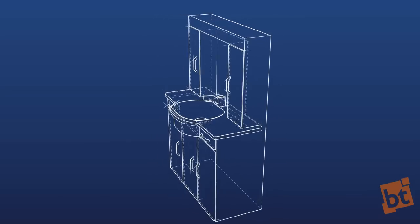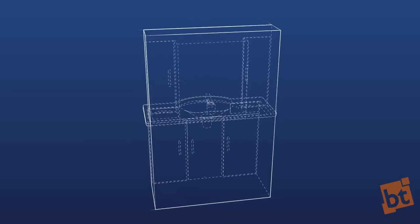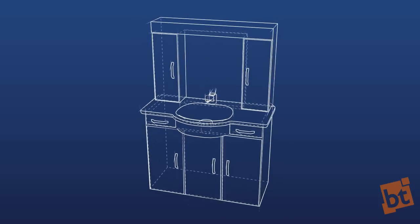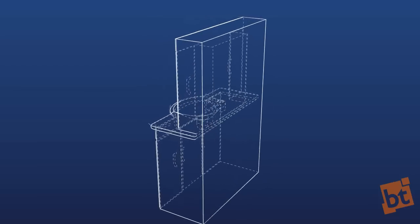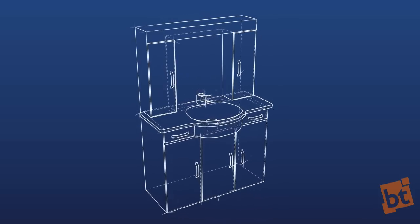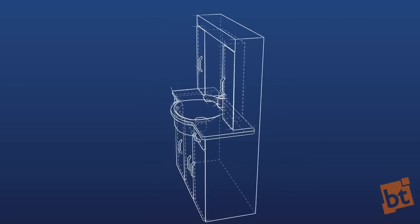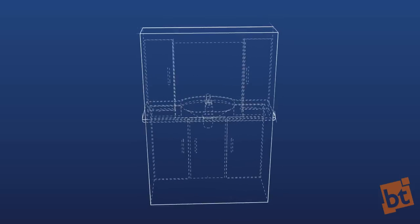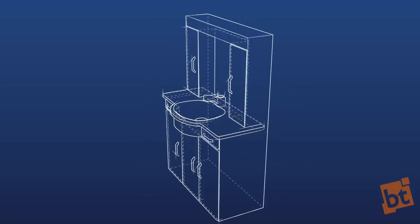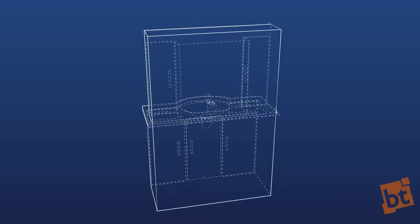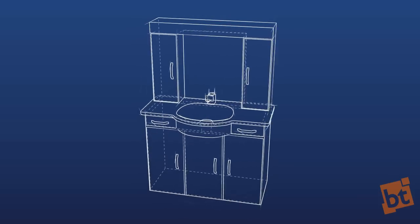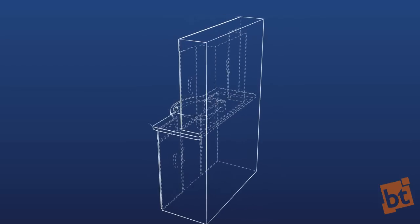Hi everyone, I'm Oliver from Blenders.com and this time we're going to take a look at Freestyle rendering. Freestyle is a mode for Blender that allows for non-photorealistic rendering. What it does is detect the edges and borders of our 3D scene and create lines on them. It has a lot of options to select different edges and how to represent them, allowing us to create artistic effects like cartoon, cell shading, blueprint effects, and a lot of different 2D artistic effects — even sketchy or abstract looks.